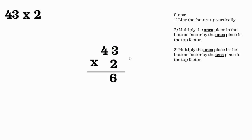Finally, we're going to multiply the ones place in the bottom factor by the tens place in the top factor. So we're going to be multiplying 2 ones times 4 tens. 2 ones times 4 tens is 8 tens, which is why the 8 is in the tens place in our answer. Our answer to 43 times 2 is 86.